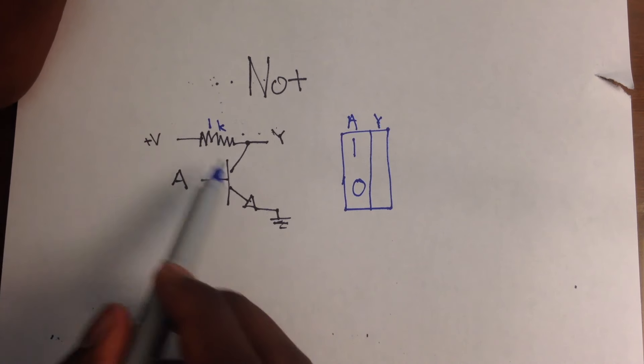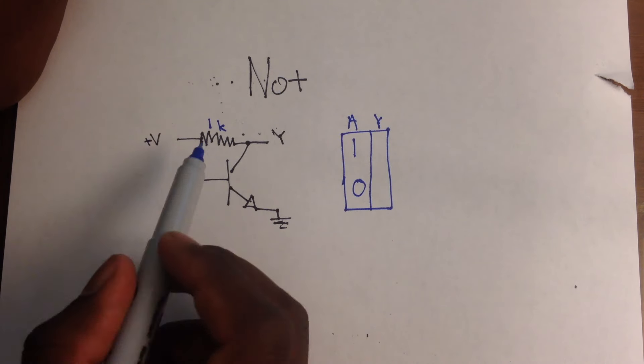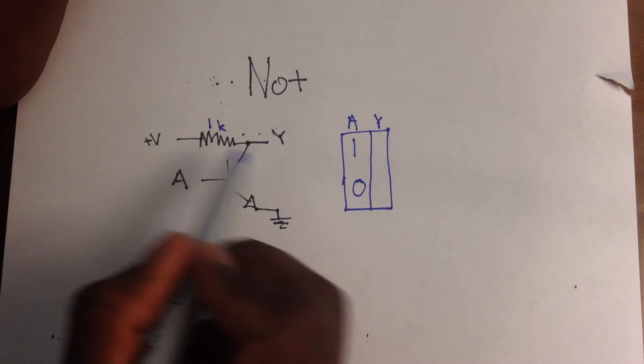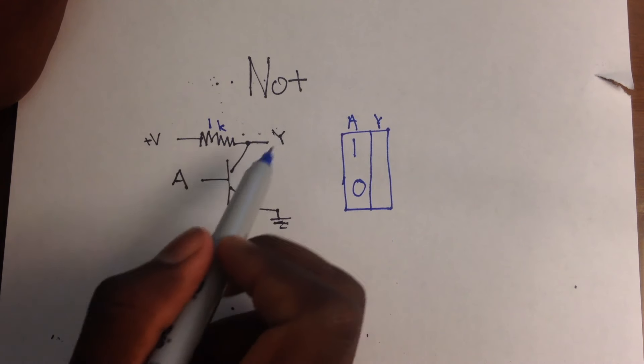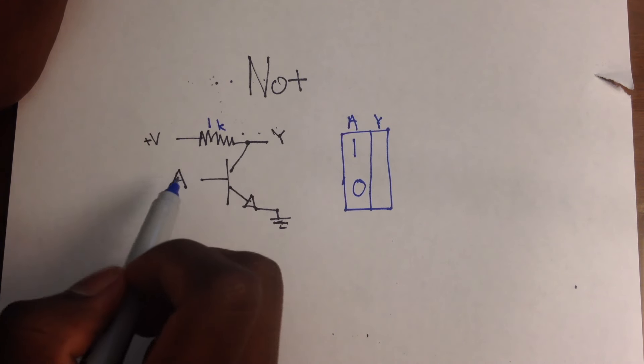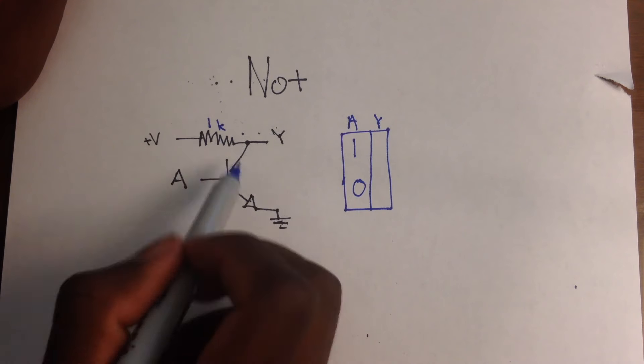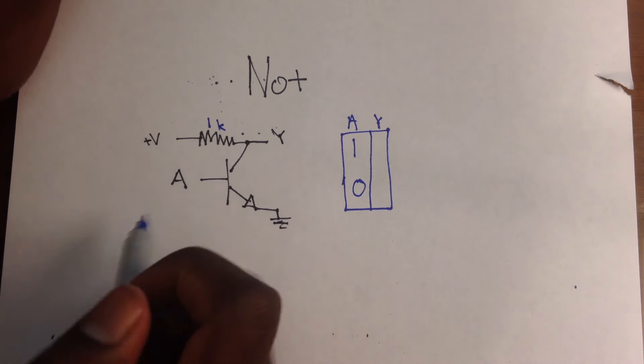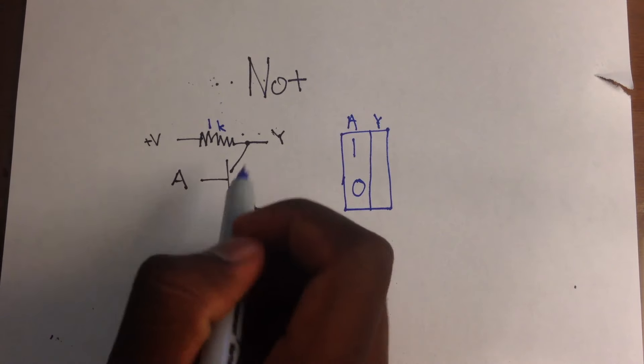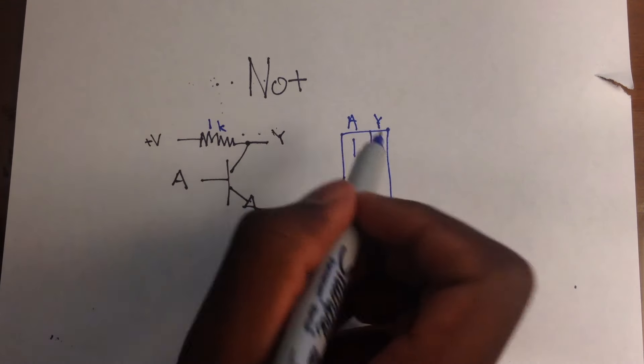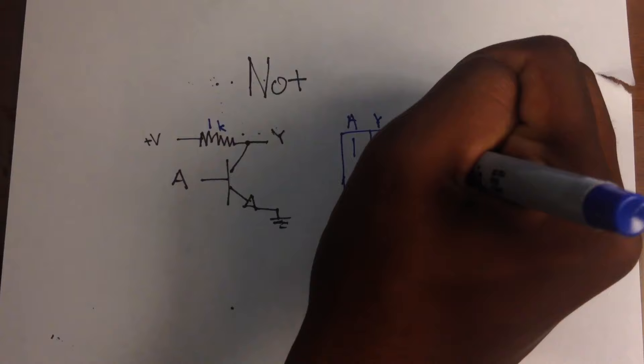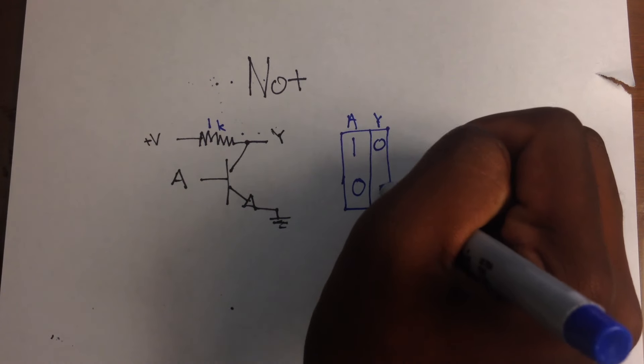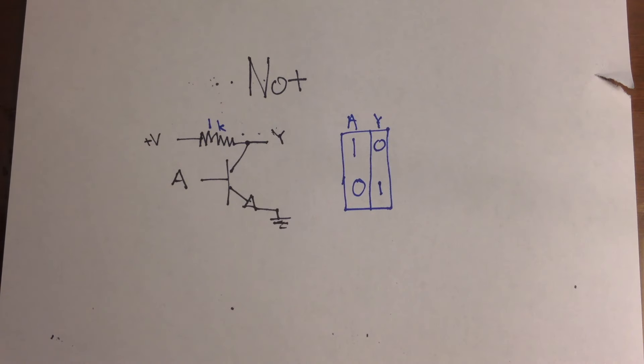So, at first glance, one would think Y will always be true. Who cares what A is, right? Who cares whether A is 1 or A is 0? Now, the reason for this, it is actually false. When A is 1, Y is 0. And when A is 0, Y is 1.